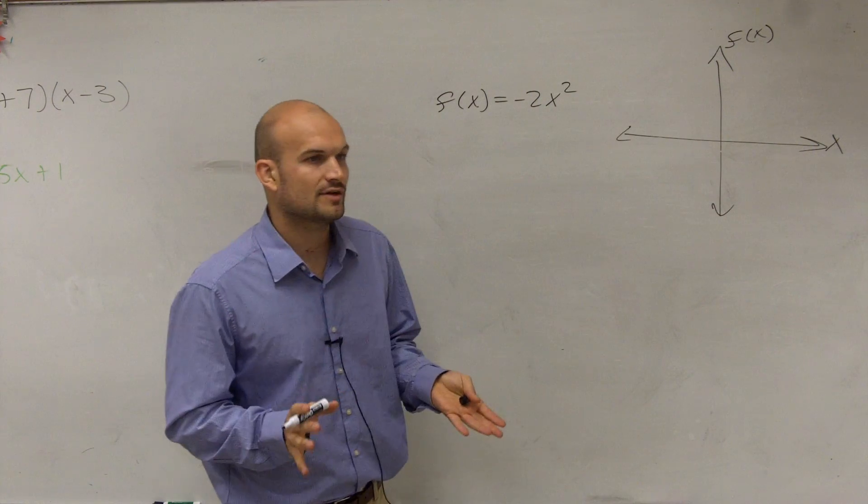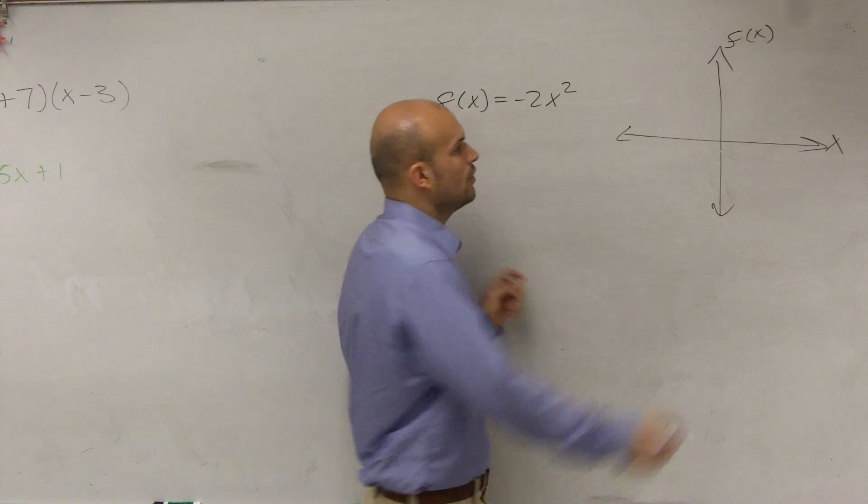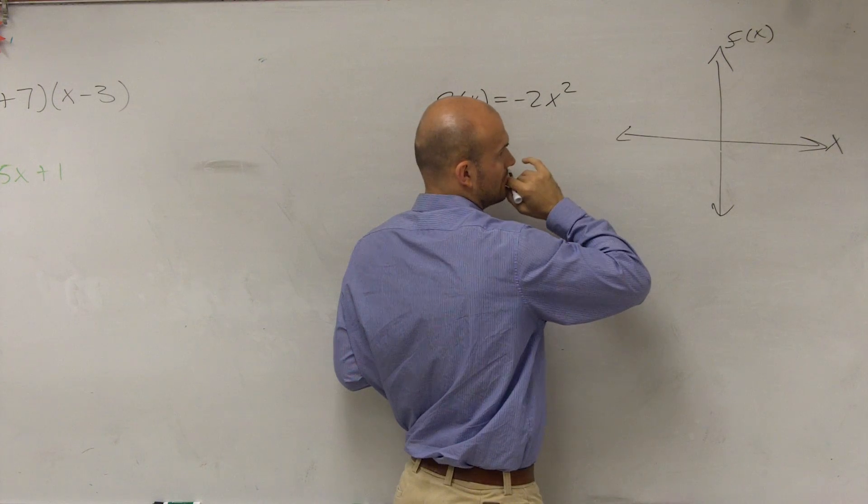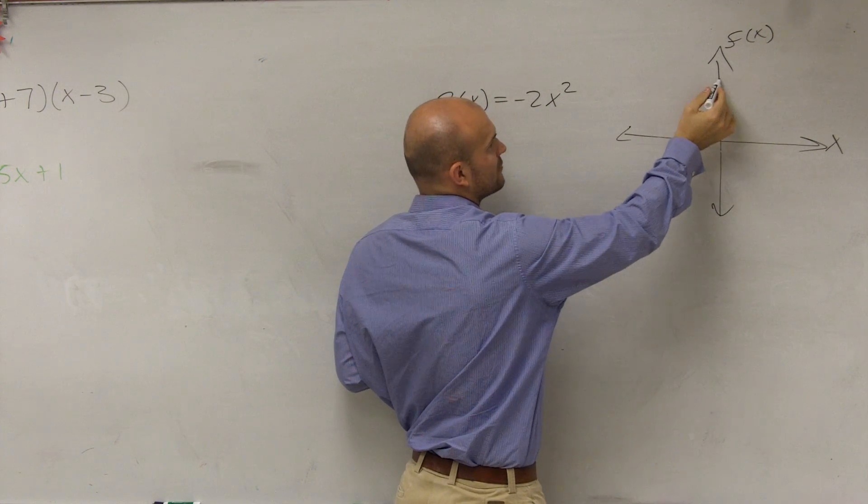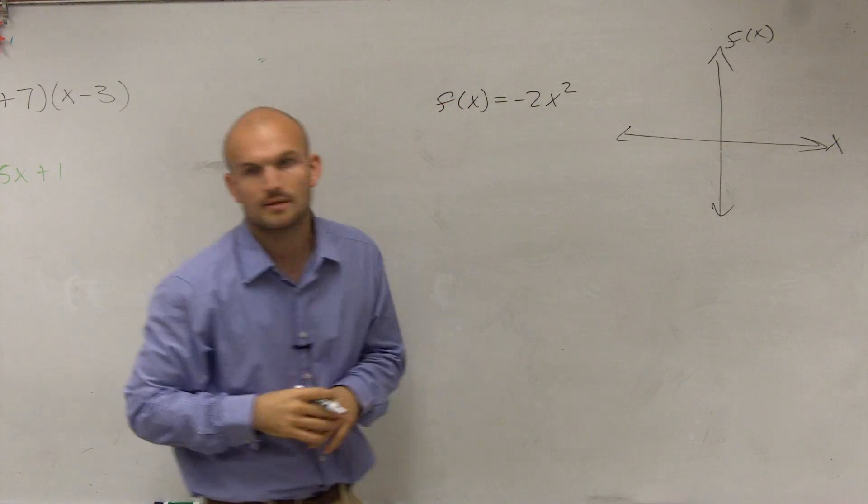Now, it's an important thing to understand. If we're asking for what the y-intercept is, what they're really asking for is what is the f(x)-intercept? Where does the graph cross when x is equal to 0?